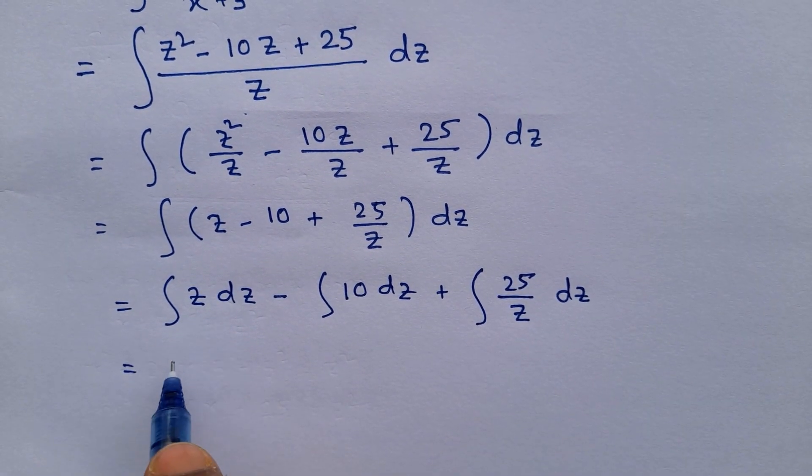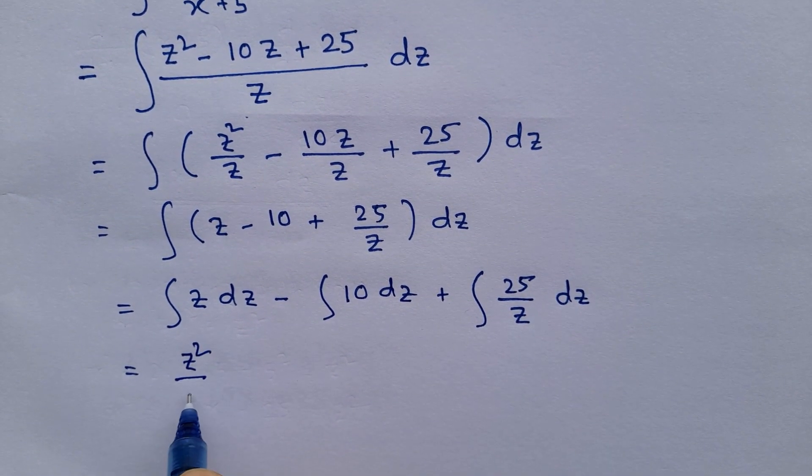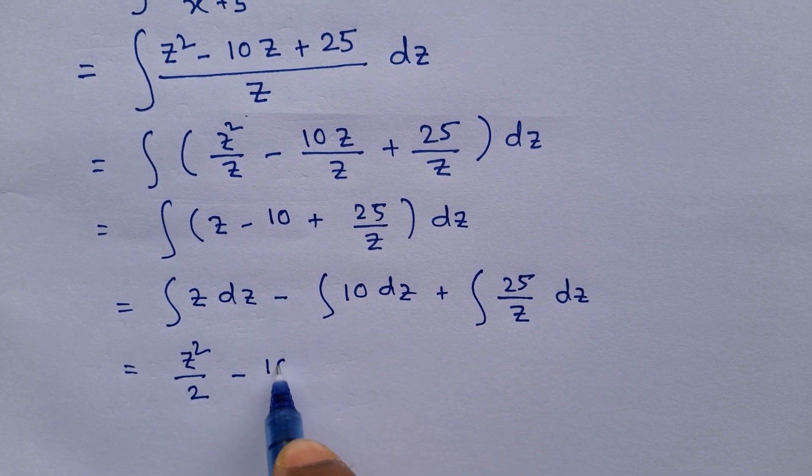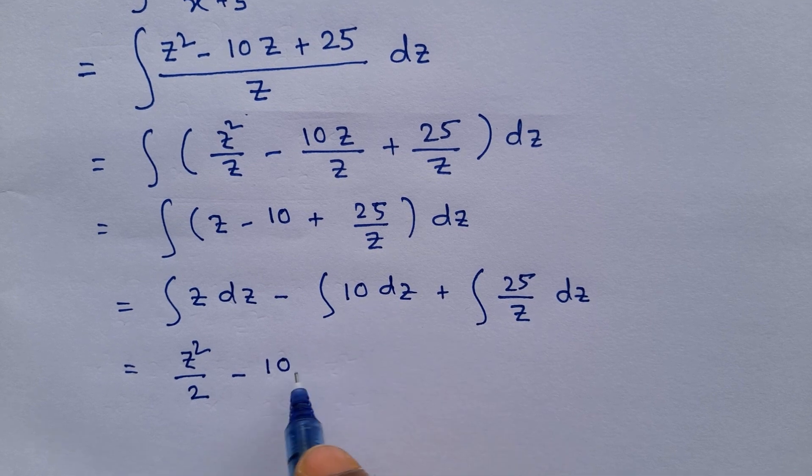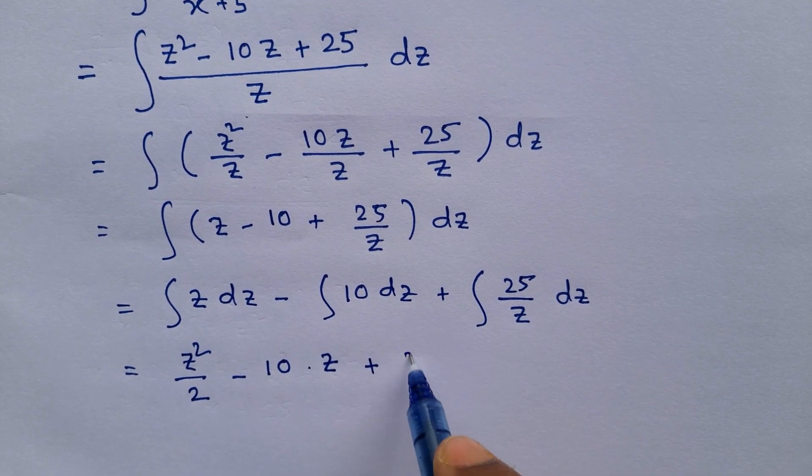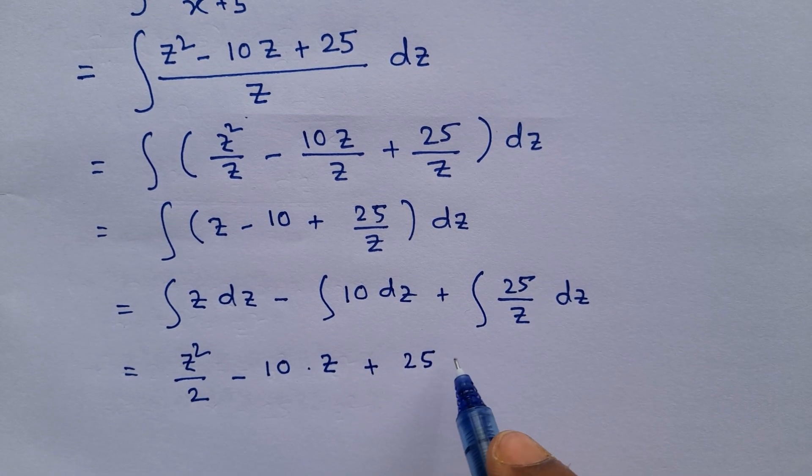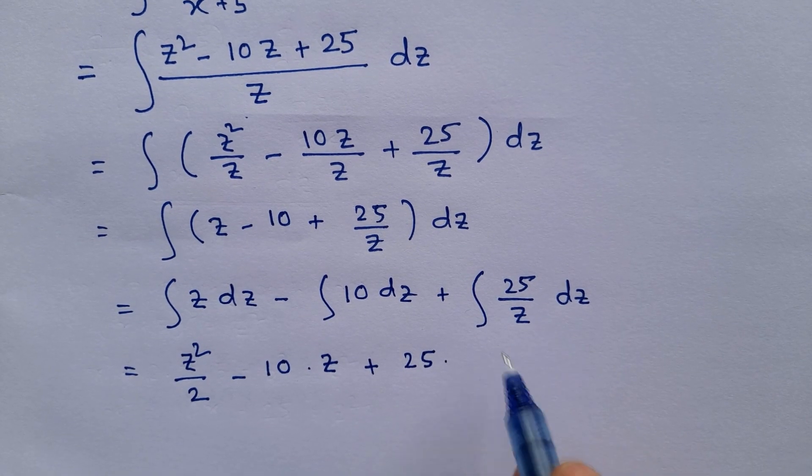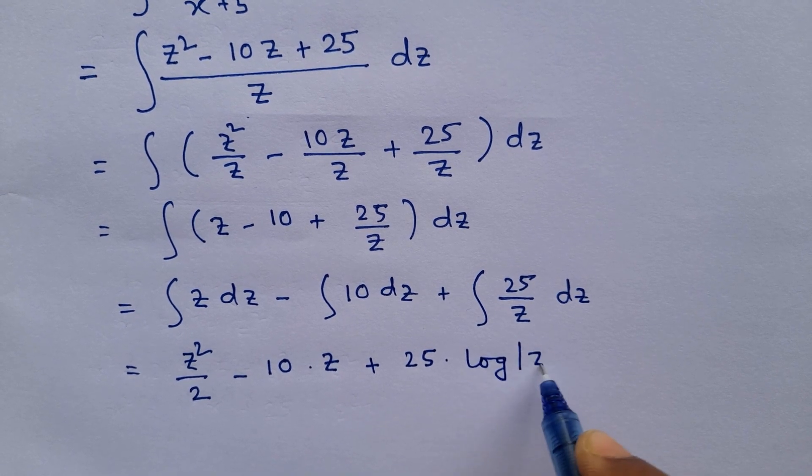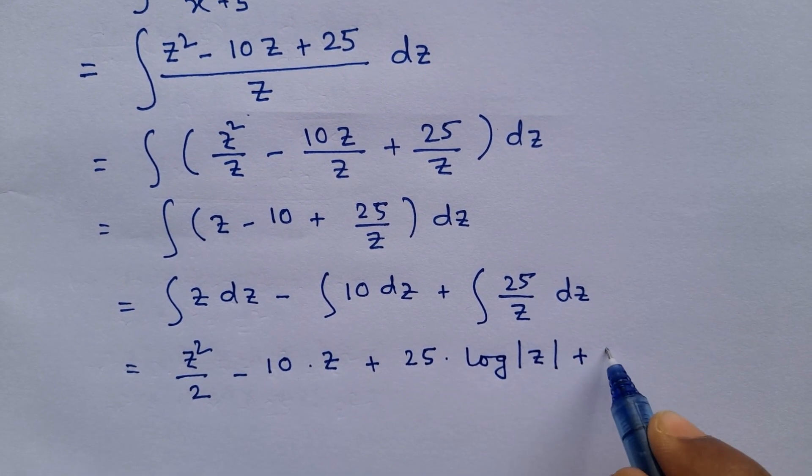This will be z squared by 2 minus this constant will come out of the integration and integration dz will be only z, plus this 25 will come outside of the integration. Integration dz by z will be log of mod z, and there will be a constant term.